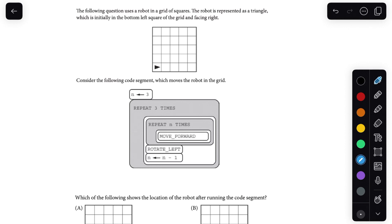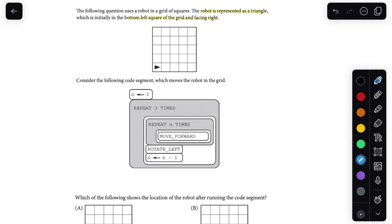This one says the following question uses a robot in a grid of squares. The robot is represented as a triangle, which is initially in the bottom left square of the grid and facing right. Consider the following code segment, which moves a robot in a grid.